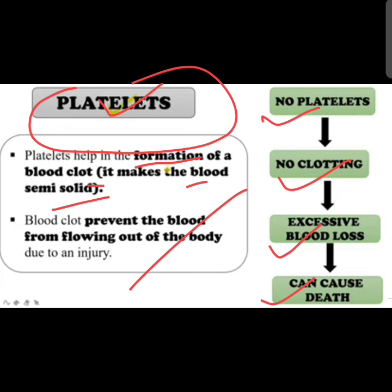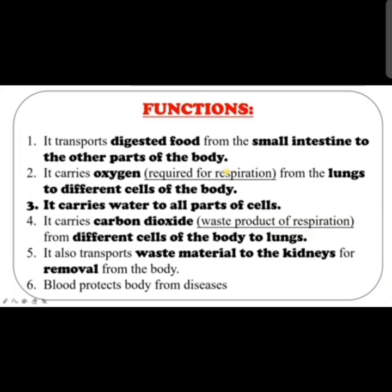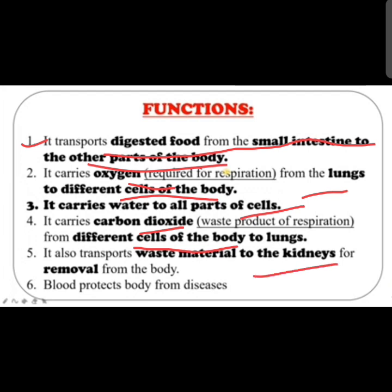To summarize the functions of blood: blood transports digested food from the small intestine to other parts of the body; it carries oxygen from the lungs to different cells; it carries water to all cells; it carries carbon dioxide and waste products from cells to the lungs and kidneys for removal; and blood also protects the body from certain diseases.